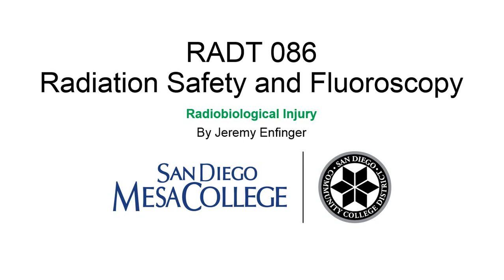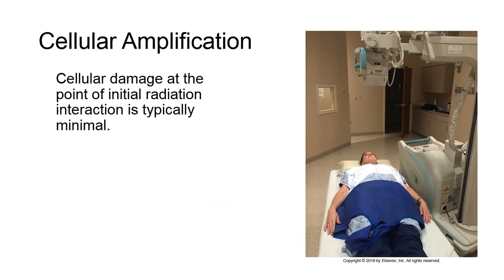Radiobiological Injury — Cellular Amplification. Cellular damage at the point of the initial radiation interaction usually involves only a very small percentage of the total number of molecules in the cell. At this stage, therefore, any biological consequences of radiation-induced changes may be relatively insignificant. Subsequently, normal cellular metabolic processes may amplify this damage, causing injury to develop from the molecular to the microscopic anatomical level, ultimately resulting in possible gross cellular malfunction.